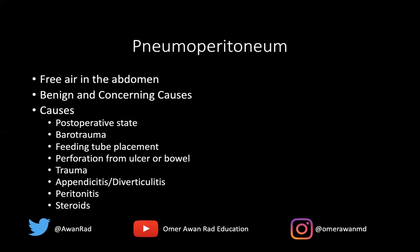Inflammatory entities like appendicitis and diverticulitis are additional causes. With significant inflammation and obstruction, the appendix can burst and release air into the peritoneal space, and the same is true for acute diverticulitis. Peritonitis — infection of the peritoneum — can also result in pneumoperitoneum. Even certain medications like steroids can cause pneumoperitoneum. There's a very wide range of causes; not all are concerning, but it's important to know both benign and concerning causes of free air under the diaphragm.